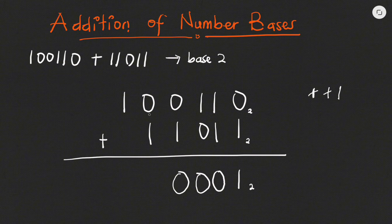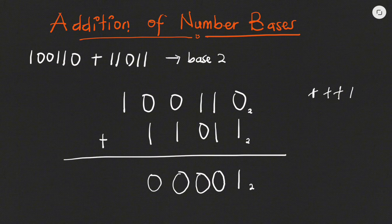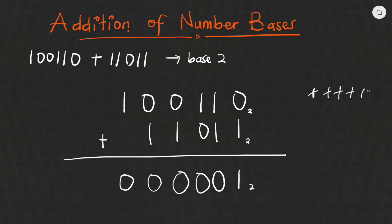Next digit: zero plus one is one, plus the one that we carry, it's two. The base will go in there once and it's left with zero — we write that. Then one plus nothing, which is one, plus the one that we carried, is two. Two goes into two once and it's left with zero, so I write down the zero.